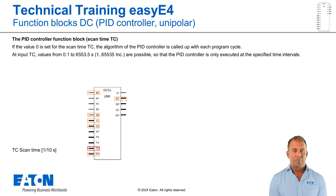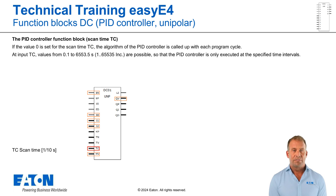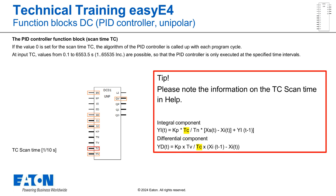Another analogue input of the DC module is the one for the scan time TC. If TC is set to 0, the controller is called up and processed with every program cycle. You can transfer values between 1 and 65535, for example 0.1 to 6553.5 seconds, to the function. As a result, the controller is only executed at the specified intervals. The scan time is included in the calculations of the I and D components of the algorithm — please refer to the formula in Help.